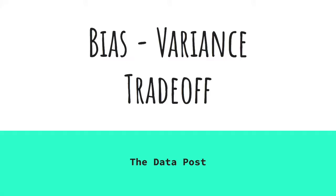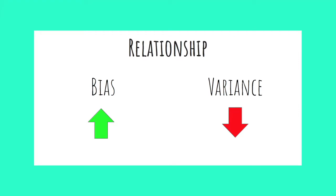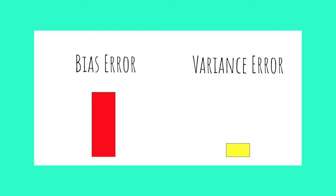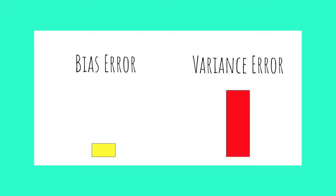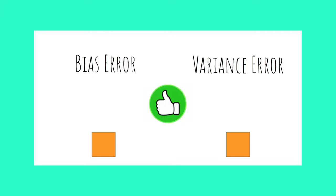Bias-variance trade-off is a fundamental concept in machine learning, wherein the engineer attempts to limit both error due to bias and error due to variance. The big struggle is that bias and variance are inversely related — as bias goes up, variance tends to go down, and as bias goes down, variance tends to go up. The idea is to find a sweet spot where both are relatively low.